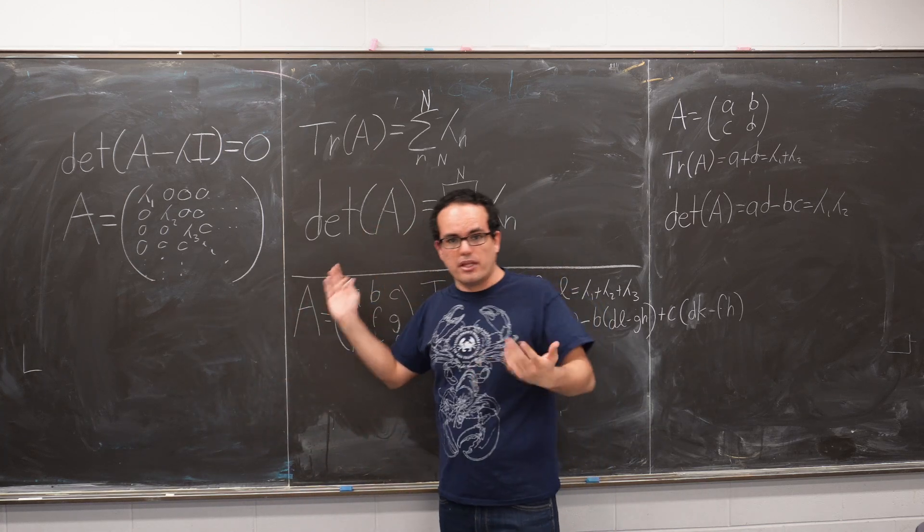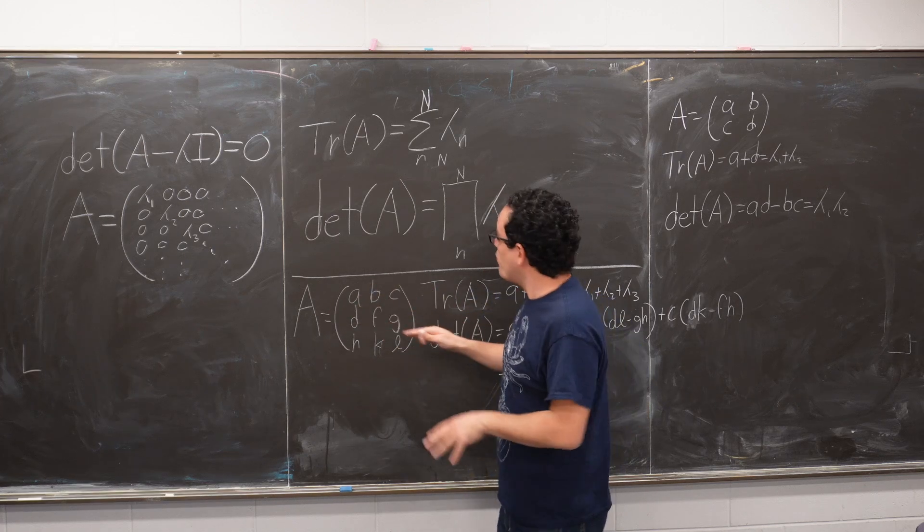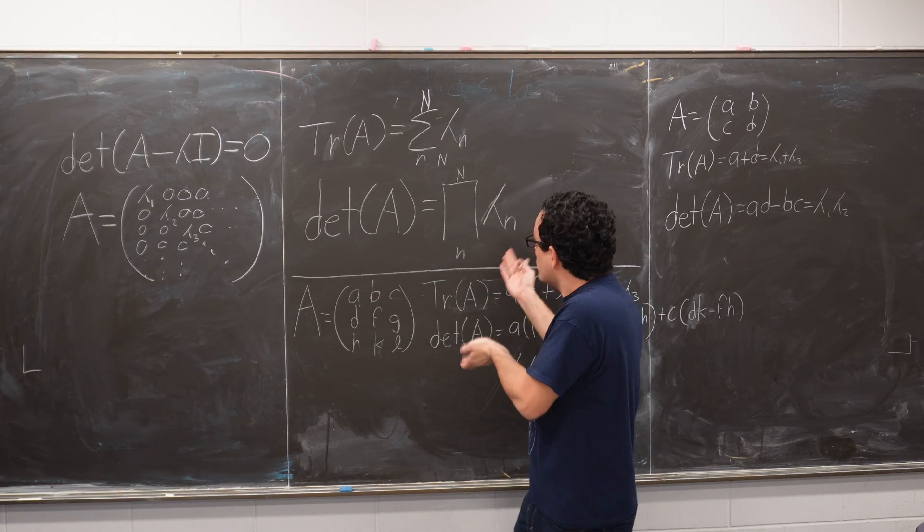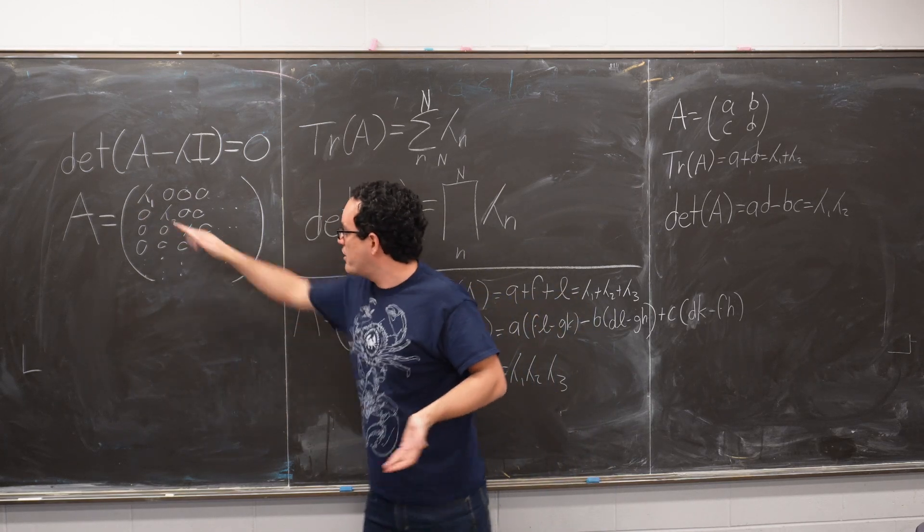And the determinant is actually way more complex. But for a diagonal matrix, it's actually very easy. It's just the multiplication of all the eigenvalues in the diagonal.